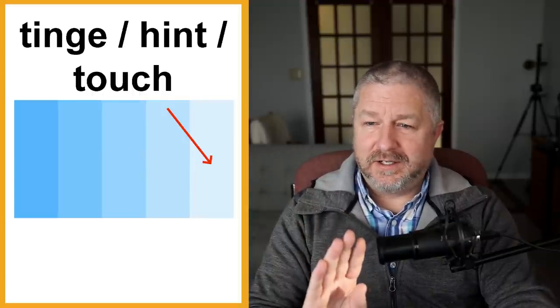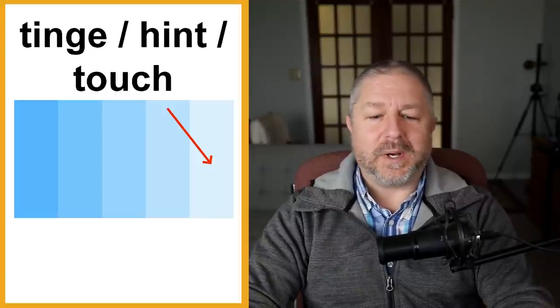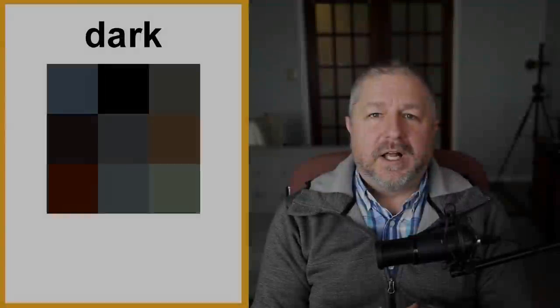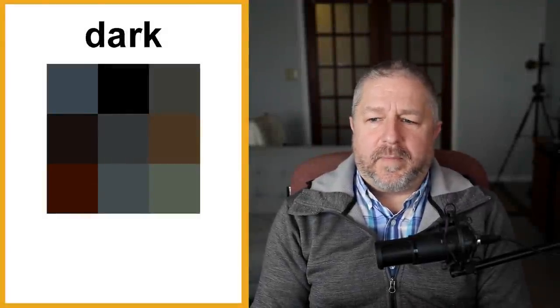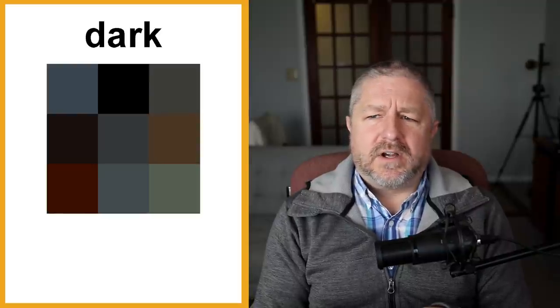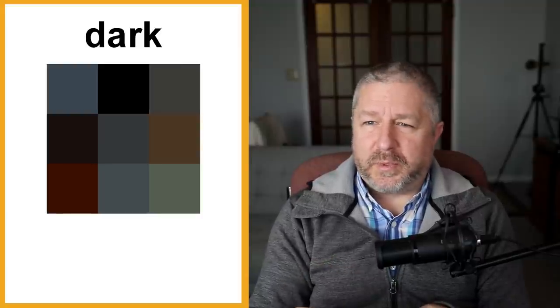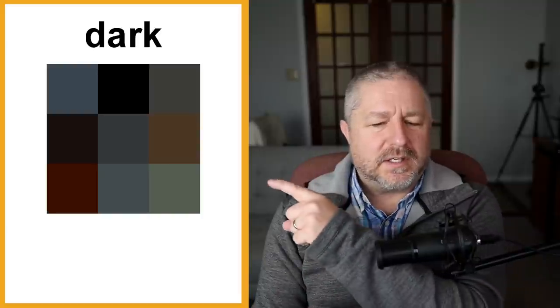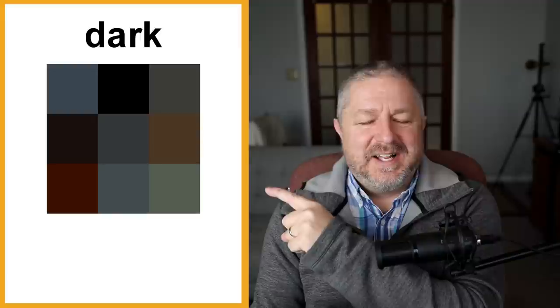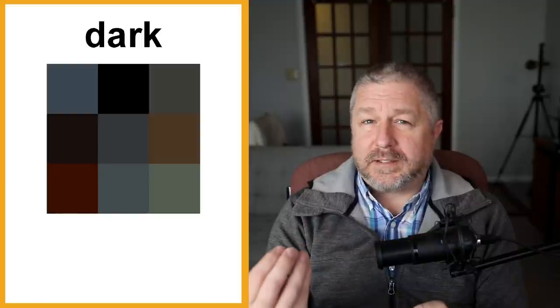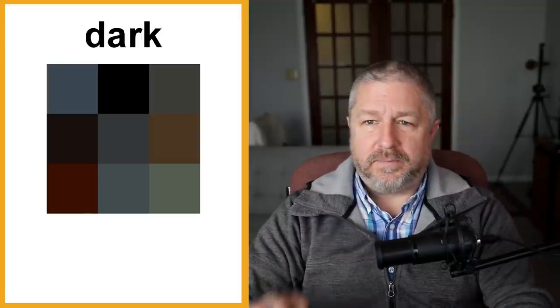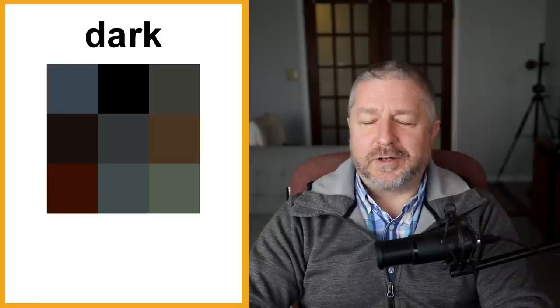I'm going to talk about black and white as colors. There's a big argument about whether black is a color or just the complete absence of color, and whether white is a color or all the colors mixed together — but for this lesson, I'll call them colors. You can describe colors as dark: dark blue, dark gray, dark brown. They're not black but they're not very colorful or bright. A dark red van, for example, would be red with a little more black in it.